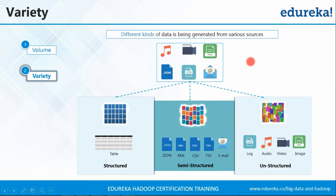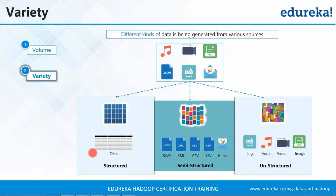Let me explain the variety with the diagram on your screen. We have audio, video files, PNG files, JSON, log files, emails — various formats. This data is classified into three forms. In structured format you have a proper schema — you know what columns will be there, it's in a tabular format. Semi-structured files are JSON, XML and CSV where schema is not defined properly. For unstructured format we have log files, audio files, videos and images. These are all considered unstructured files.